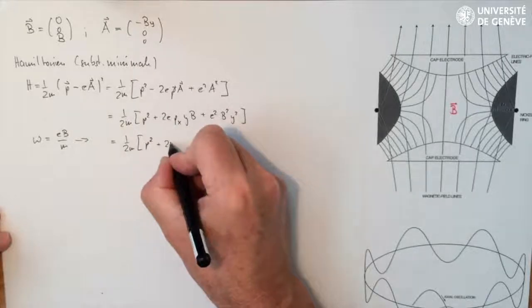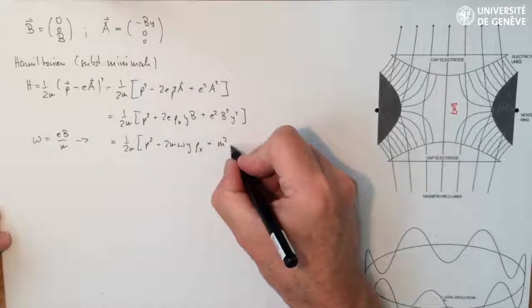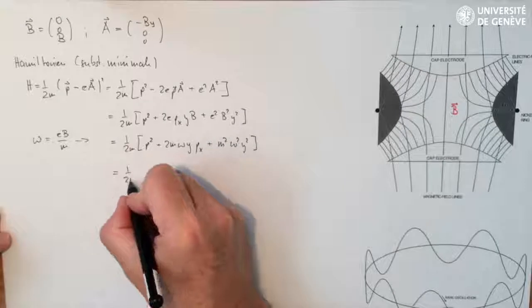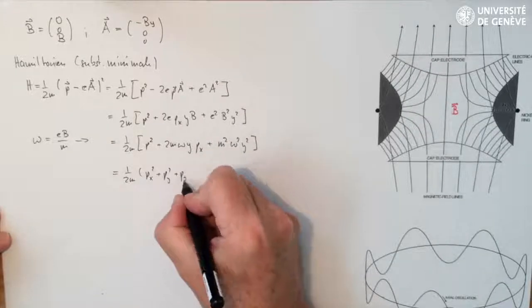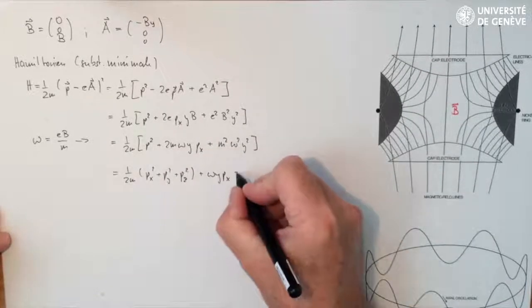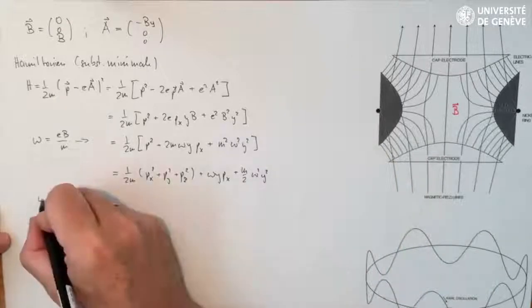If we write this in terms of Cartesian components of the momentum, we find that all the terms proportional to px can be joined together and the remaining term is pz squared over 2m.